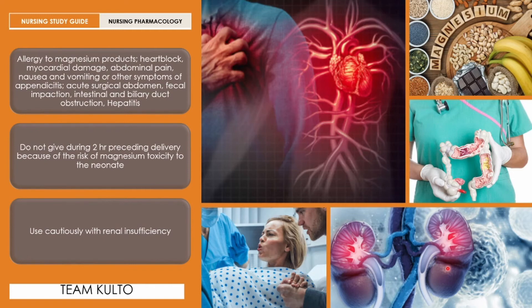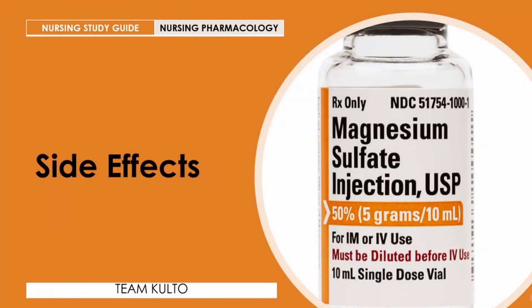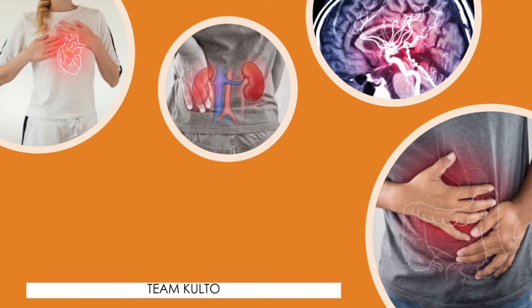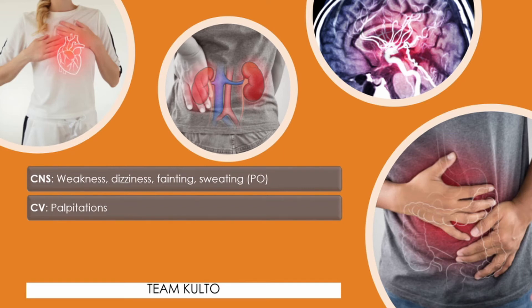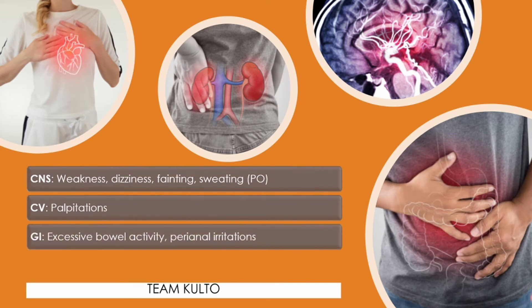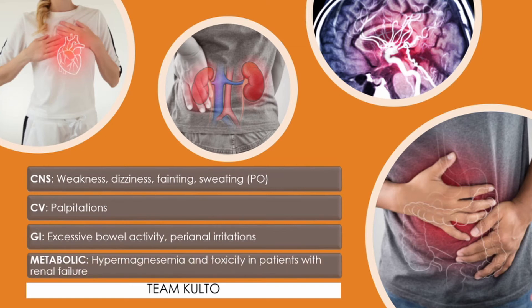So what are the side effects? When you talk about side effects, there are effects on the central nervous system — it may manifest as weakness, dizziness, fainting, and sweating. For cardiovascular: palpitations. For GI: excessive bowel activity and perianal irritation — there may be itching in that area. And metabolically: hypermagnesemia and toxicity in patients with renal failure.